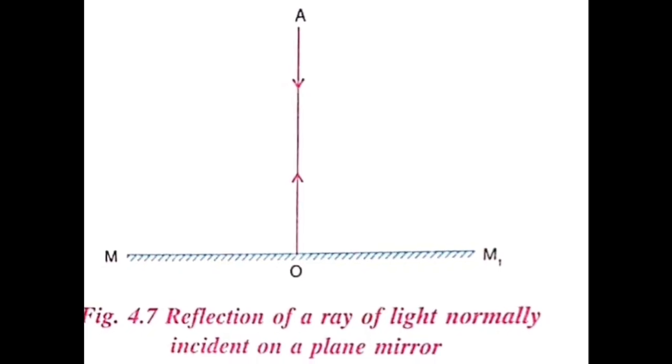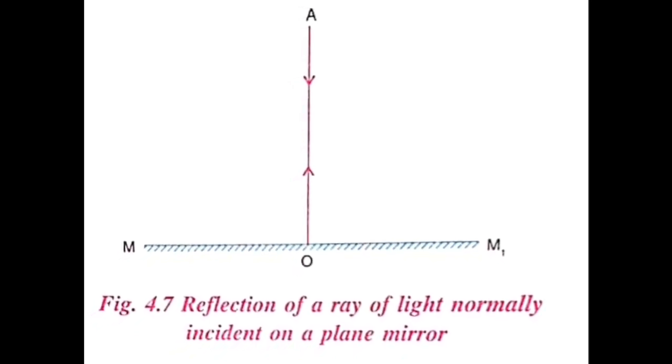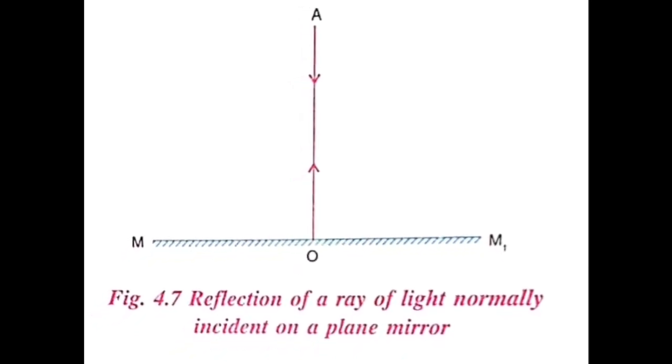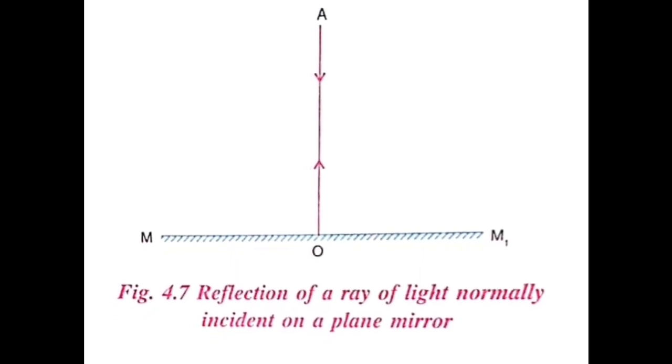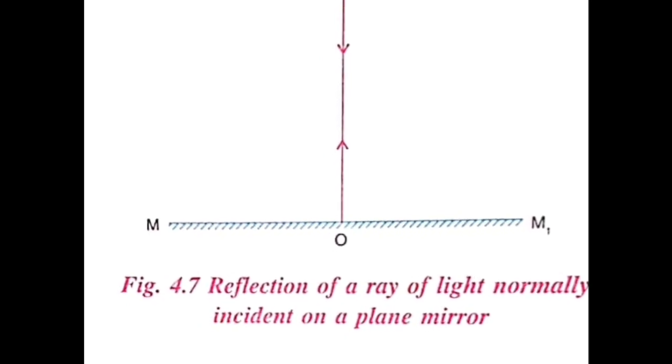The diagram here shows an incident ray falling normally on a piece of mirror. The angle of incidence is zero, the angle of reflection will also be zero, that is perpendicular to the mirror. So we will study the formation of image of a point object by a plane mirror.